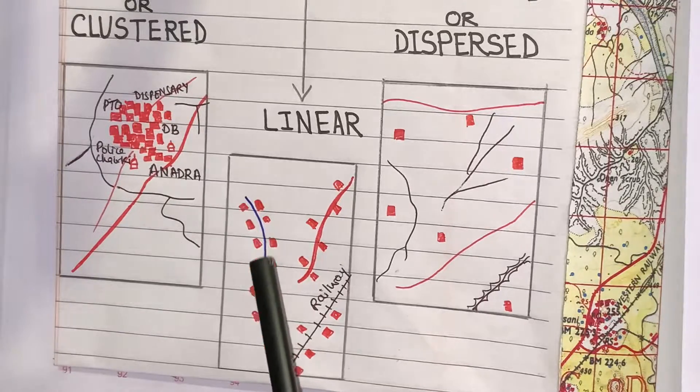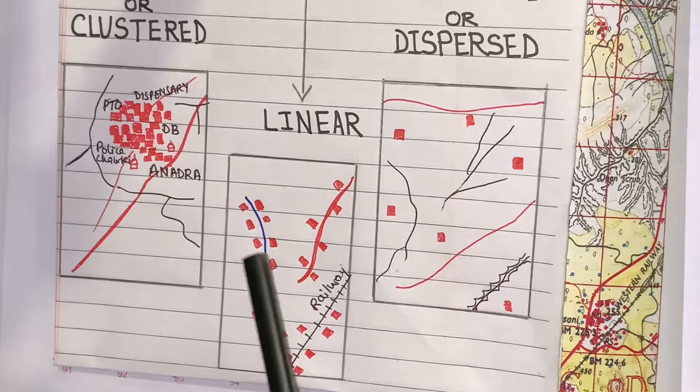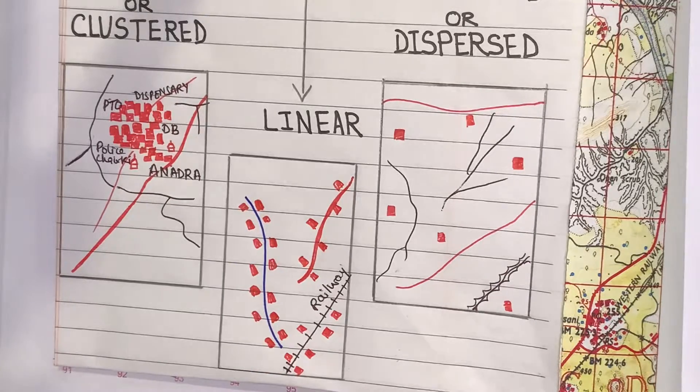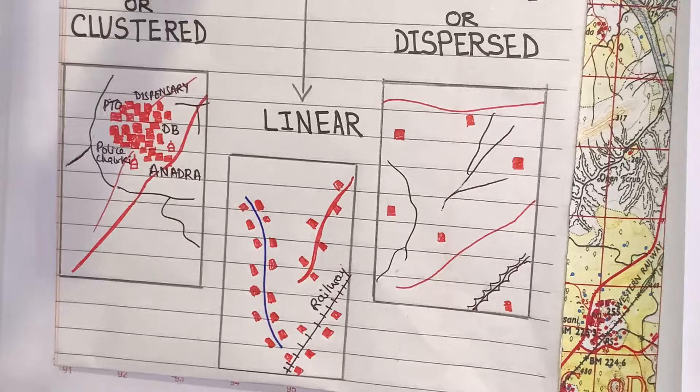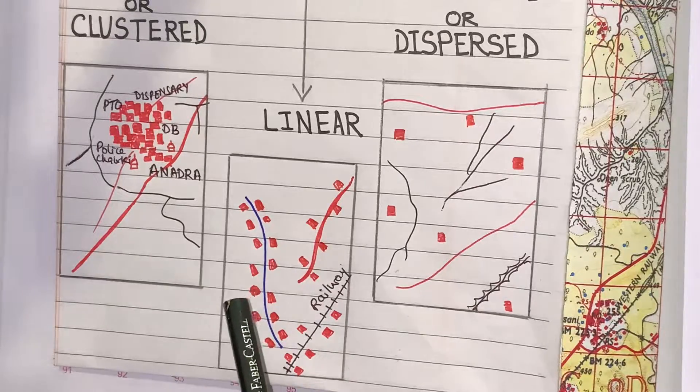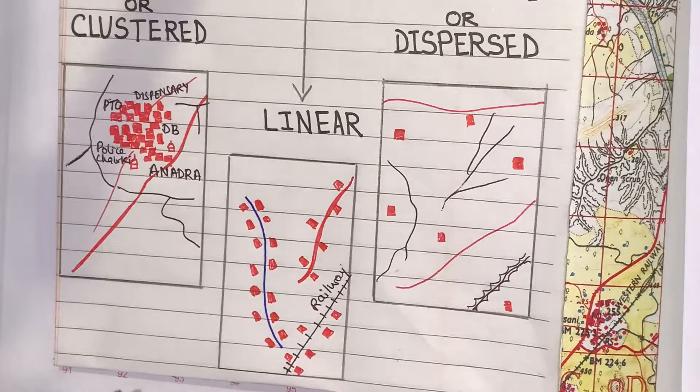Here, you can see blue, I have drawn river. On both sides of river, you can see huts. People live here because availability of water, easy availability of water. The land is also fertile, so they can do agriculture here. And the soil is very soft.